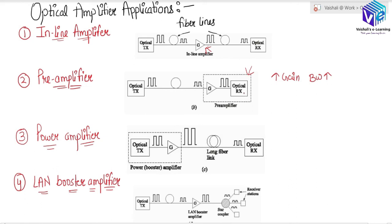The third configuration is the power amplifier, which is used with the optical transmitter to increase or boost the transmitted power. When we boost the transmitting power, the transmission distance is enhanced. At the receiving end we can have repeater-less transmission distance of up to around 200 to 250 km.